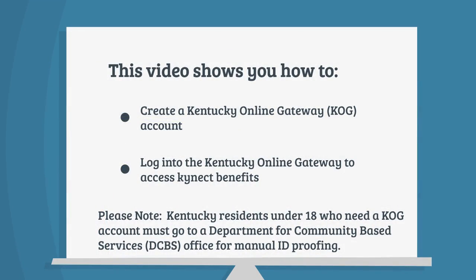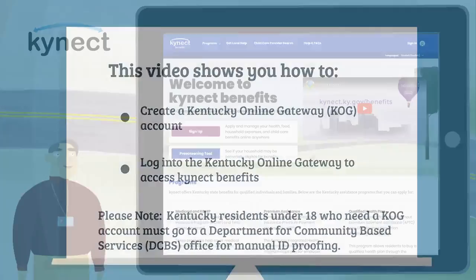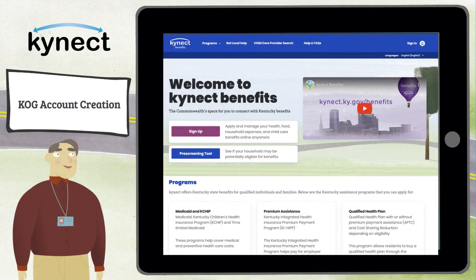This video shows you how to create a Kentucky Online Gateway COG account, then how to log into the Kentucky Online Gateway to access Connect Benefits. Please note: Kentucky residents under 18 who need a COG account must go to a Department for Community-Based Services (DCBS) office for manual ID proofing.